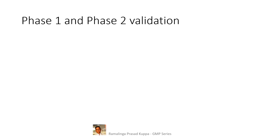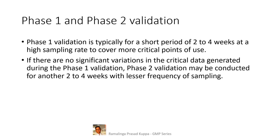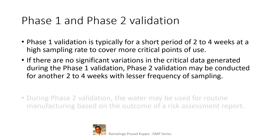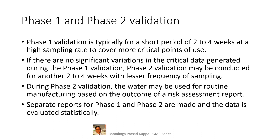The strategy described previously is summarized here. Phase 1 validation is typically for a short period of 2 to 4 weeks at a high sampling rate to cover more critical points of use. If there are no significant variations in the critical data generated during phase 1 validation, phase 2 validation may be conducted for another 2 to 4 weeks with lesser frequency of sampling. During phase 2 validation, water may be used for routine manufacturing based on the outcome of the risk assessment report. Separate reports for phase 1 and phase 2 are made and the data is evaluated statistically.